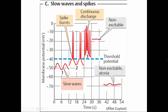When the slow waves reach the threshold potential, spike potentials are generated, and these spike potentials lead to contraction of the longitudinal and circular muscles. The spike potential is due to the influx of calcium ions. The frequency of the spike potential varies from one to ten spikes per second.